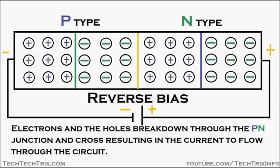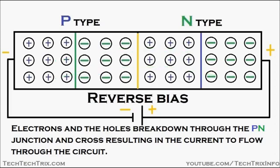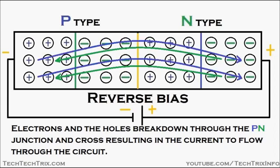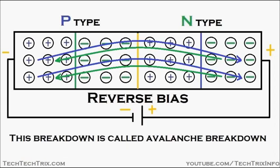You can see the electrons, which are negatively charged, cross this junction — breaking through it — and move towards the P region, and the holes, which are positively charged, break through this junction and move towards the N region, resulting in the flow of current.